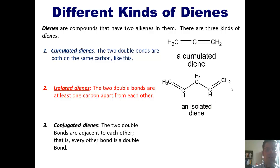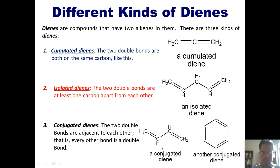The third example is very special, conjugated dienes. These are dienes in which the two double bonds are adjacent to each other. That is, every other bond is a double bond. So it goes double, single, double, single. Here are some examples.